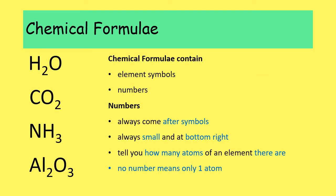Looking at chemical formula: they contain element symbols and numbers. The numbers always come after symbols, always written in small subscript to the bottom right of a symbol. The numbers tell you how many atoms of that particular element there are. If an element doesn't have a number after it, there's only one of those atoms. So in H₂O there are two H's and one O; in CO₂ there is one C and two O's; in NH₃ there is one N and three H; and in aluminium oxide there are two Al and three O.